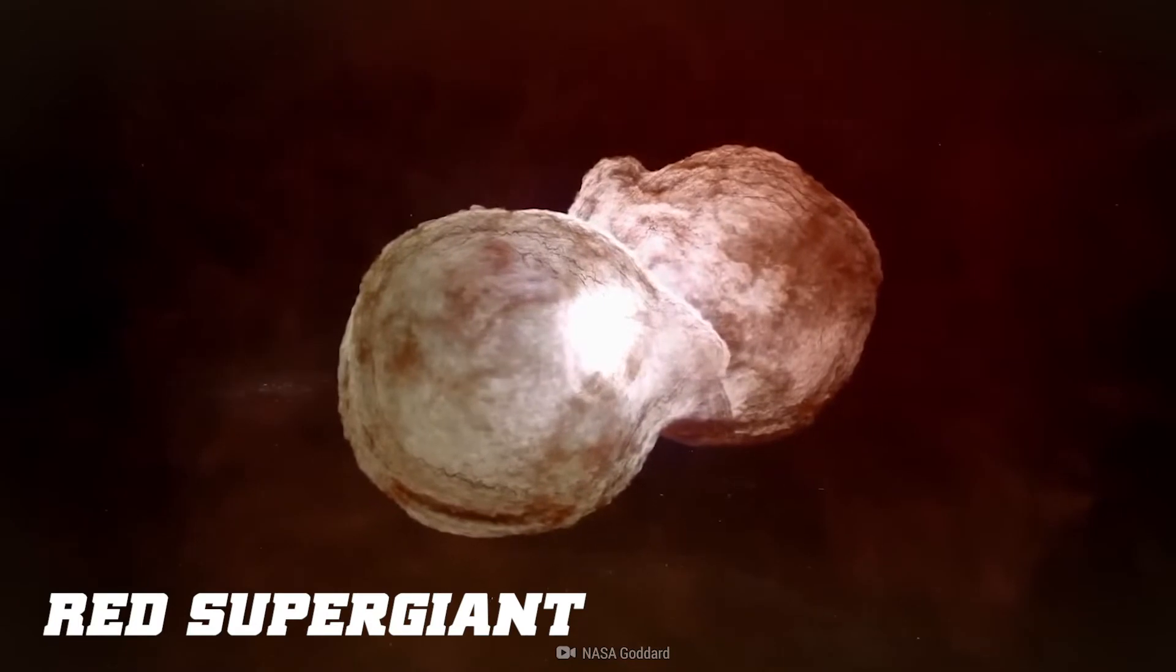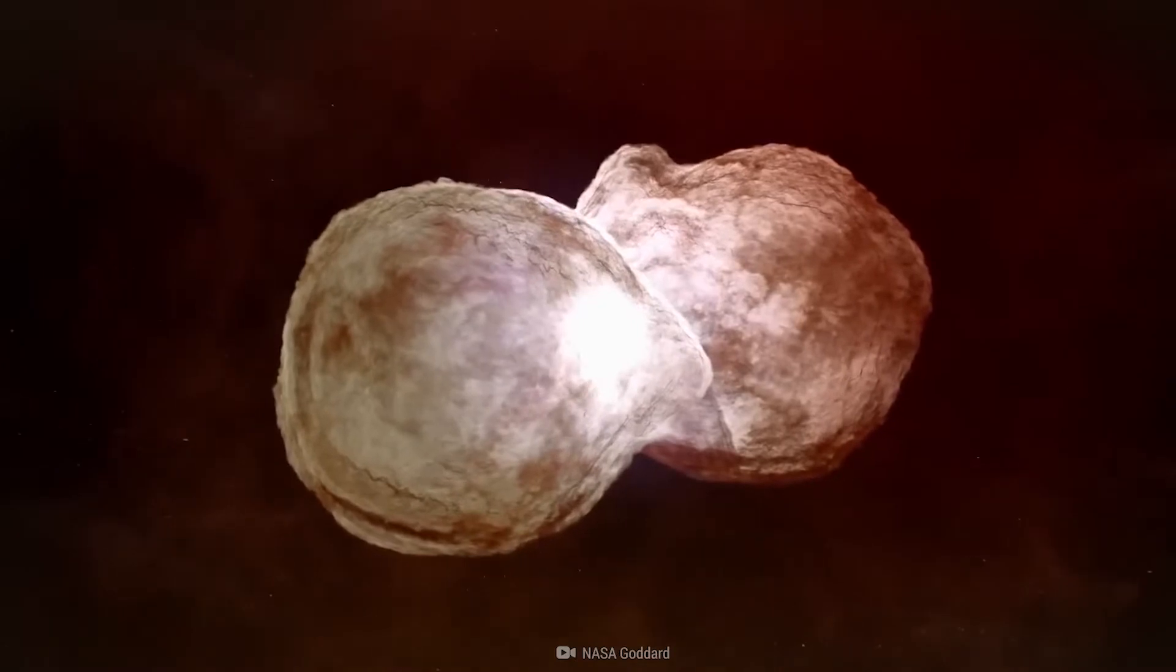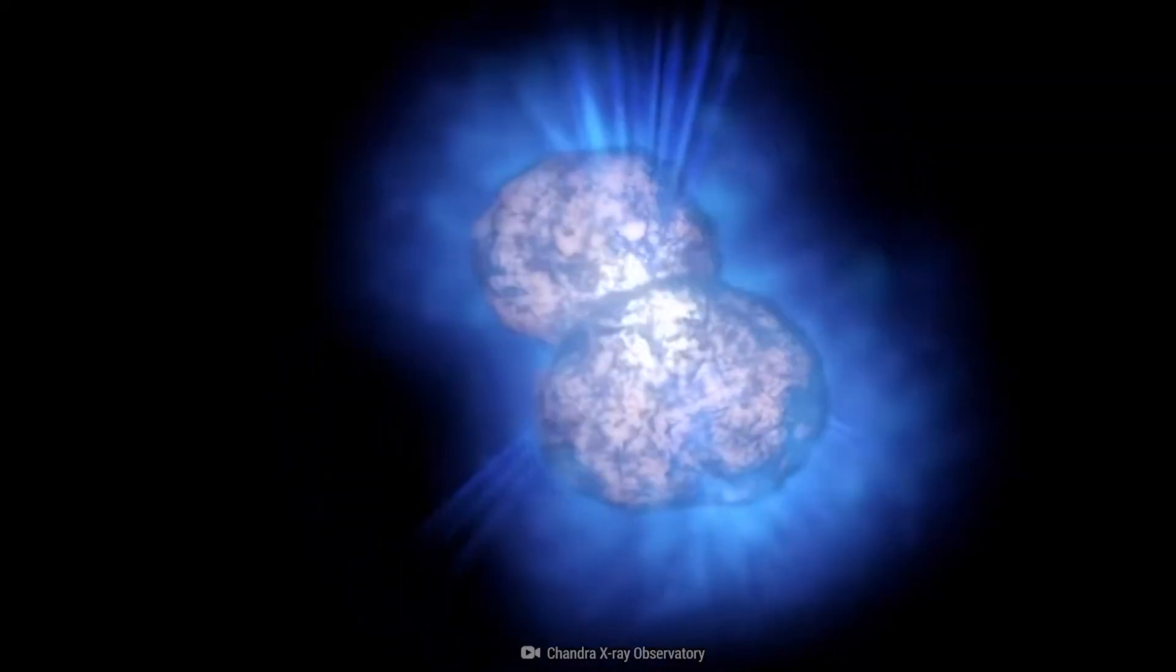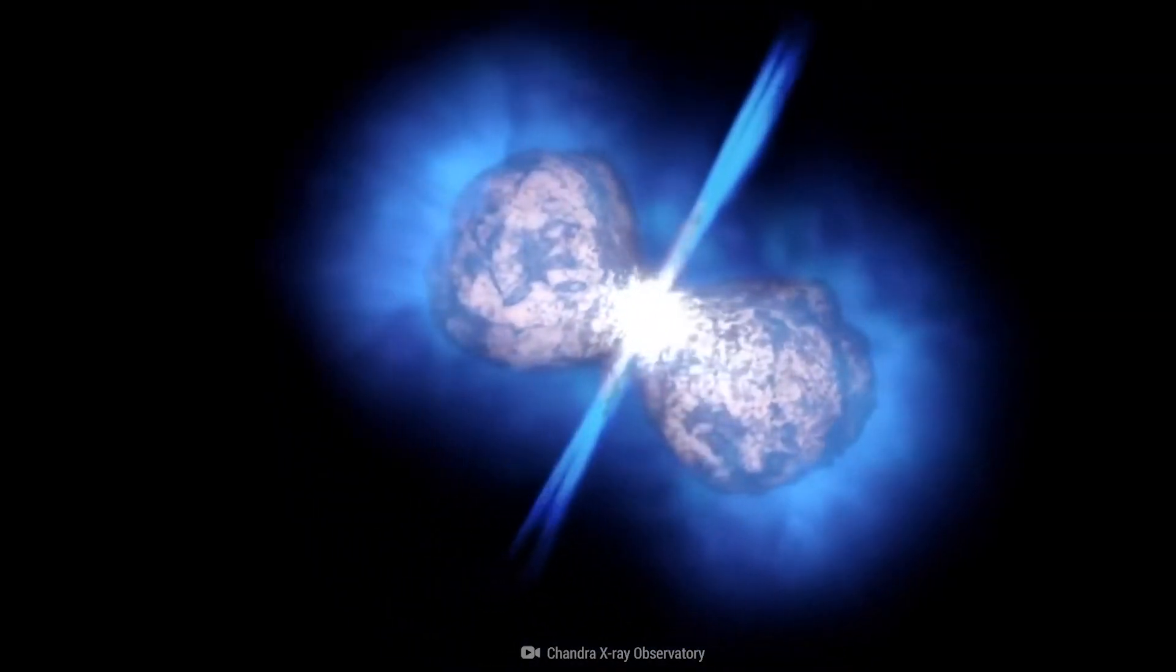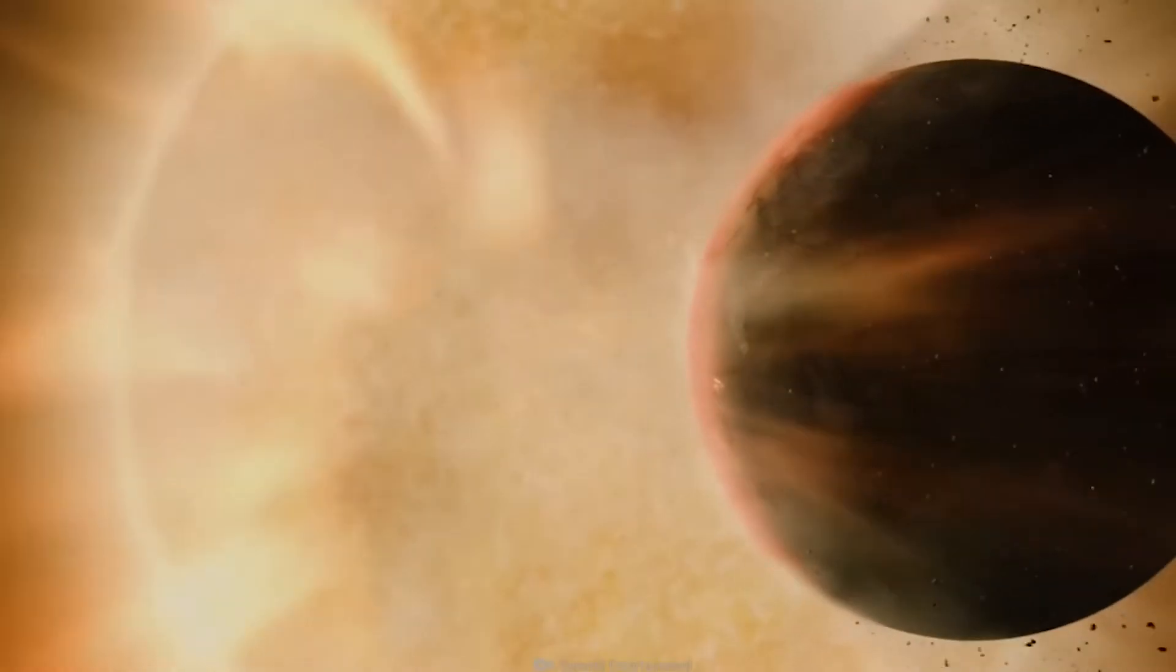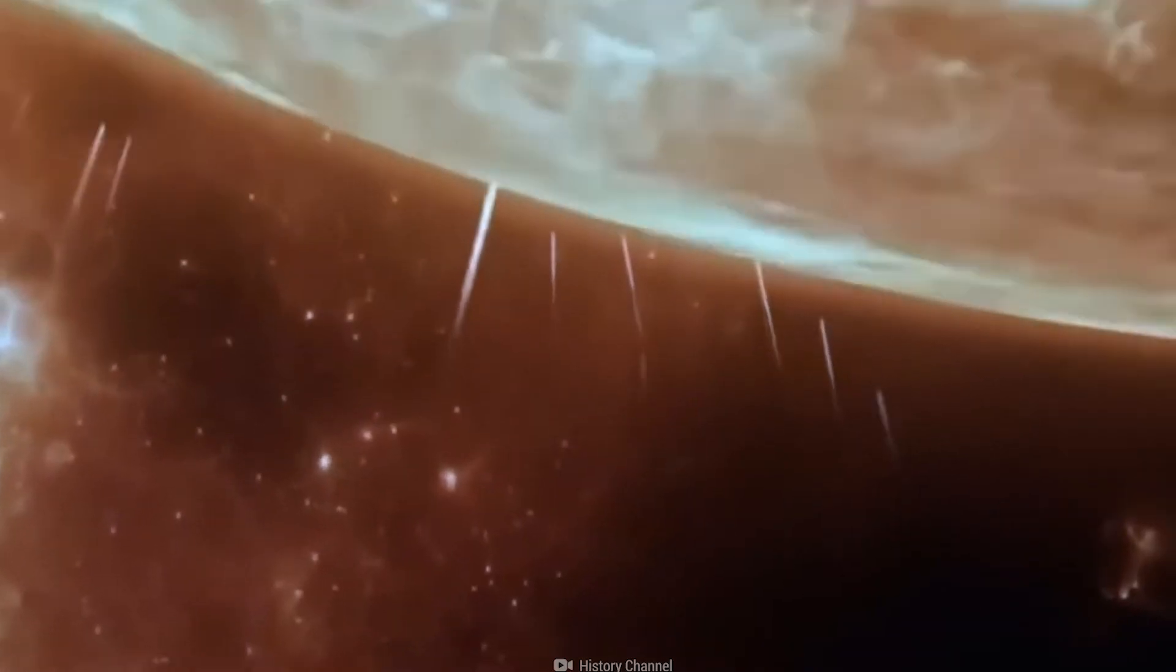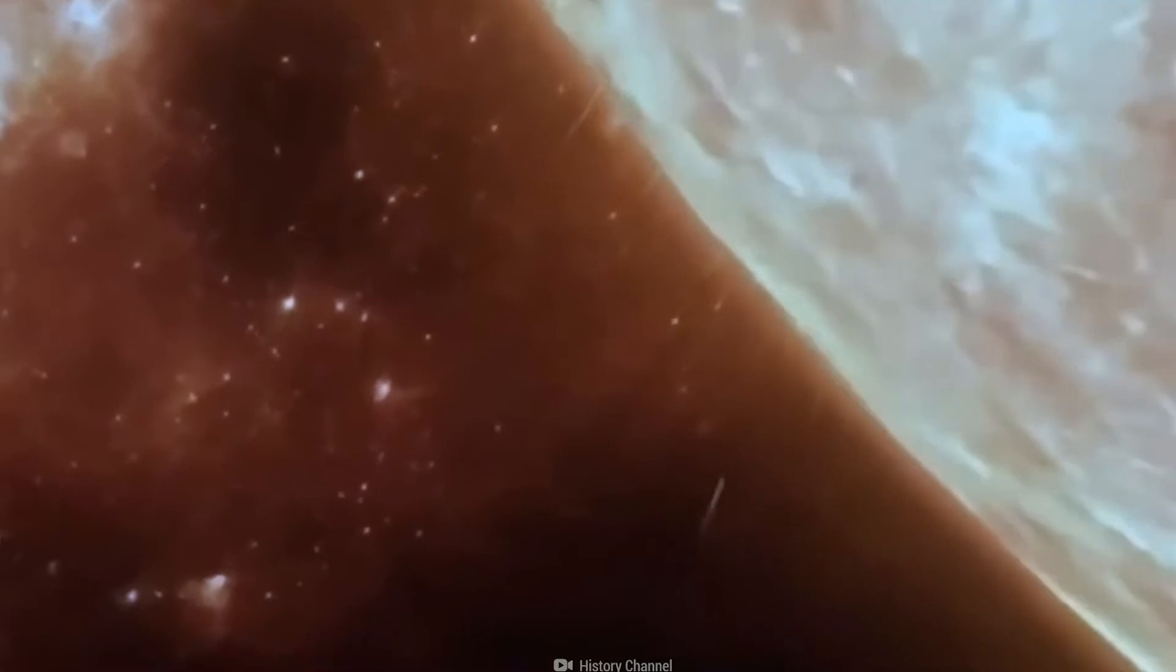Red supergiant: As UY Scuti consumed its core hydrogen fuel, it expanded and evolved into a red supergiant. During this phase, the star swelled in size, and its outer layers expanded outward. UY Scuti's radius grew to an astonishing scale, surpassing the orbits of planets in our solar system. The star became exceptionally luminous, radiating enormous amounts of energy into space.